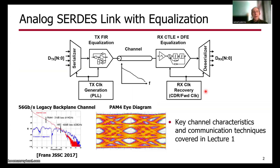Let's start with the basic block diagram of an analog SERDES transceiver link, where the primary function is to take a parallel set of bits at the transmitter, serialize them, send them across the channel, and then at the receiver side, perform deserialization. One thing that makes this difficult is the frequency-dependent loss characteristics of the channel, which typically displays a low-pass characteristic.